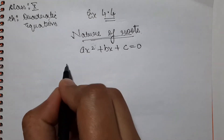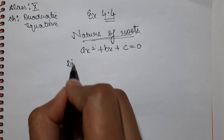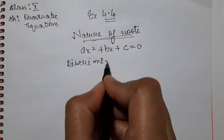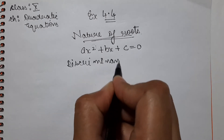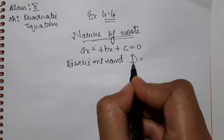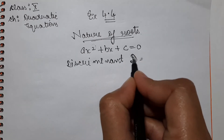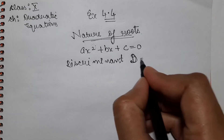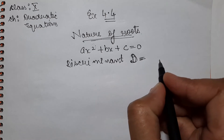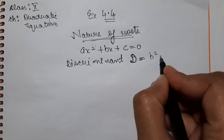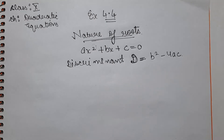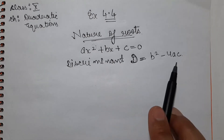The discriminant — it is a big name, but we only write it in short as D. The formula for discriminant is: D is equal to b² minus 4 times a times c. This is the formula.